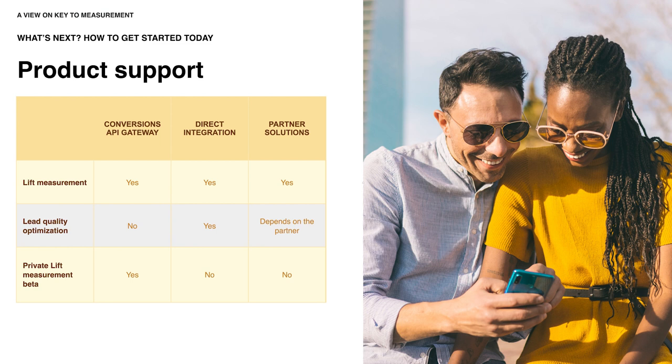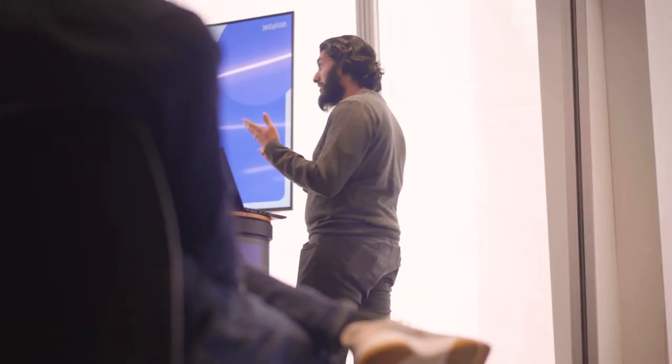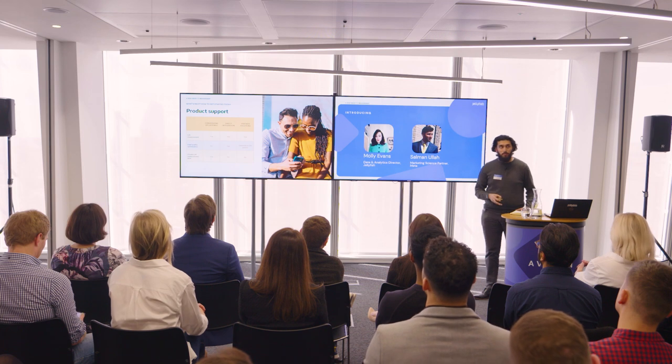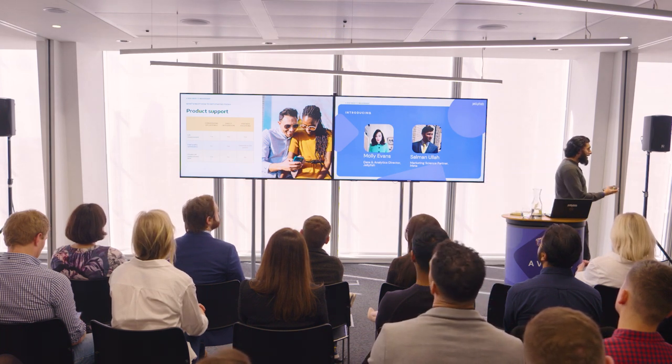This slide shows the product support and measurement enabled with Conversions API — it is subject to change. Conversion Lift measurement is enabled through any form of Conversions API implementation, though requirements such as following brilliant basics and having an EMQ score of at least six should be in place. Lead quality optimisation is more useful from a direct integration implementation and could also be available via some partners. The private lift measurement beta is currently with the Conversions API gateway, though this may open up to other implementations — get in contact if interested.